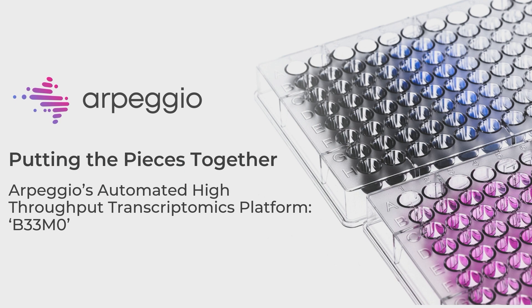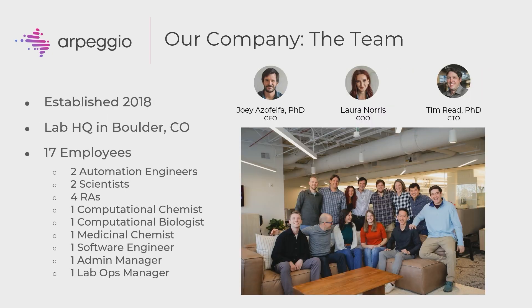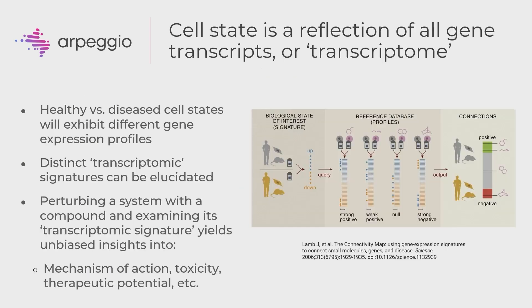Brief introduction about our team: we started in 2018, a small, tight-knit but skilled and diversified team of 17 people with headquarters in Boulder, Colorado. We're doing high-throughput transcriptomics, so just a couple of notes about the transcriptome: the cell state is going to be a reflection of the transcriptome, so if you can measure the abundance of transcripts on a global scale, then you can interrogate cell state. If you take two systems — perhaps healthy cells and disease cells — look at their transcriptomes, and then perturb those systems with a chemical compound of some interest, you can start drawing connectivity maps between them. That's kind of what we do at Arpeggio.